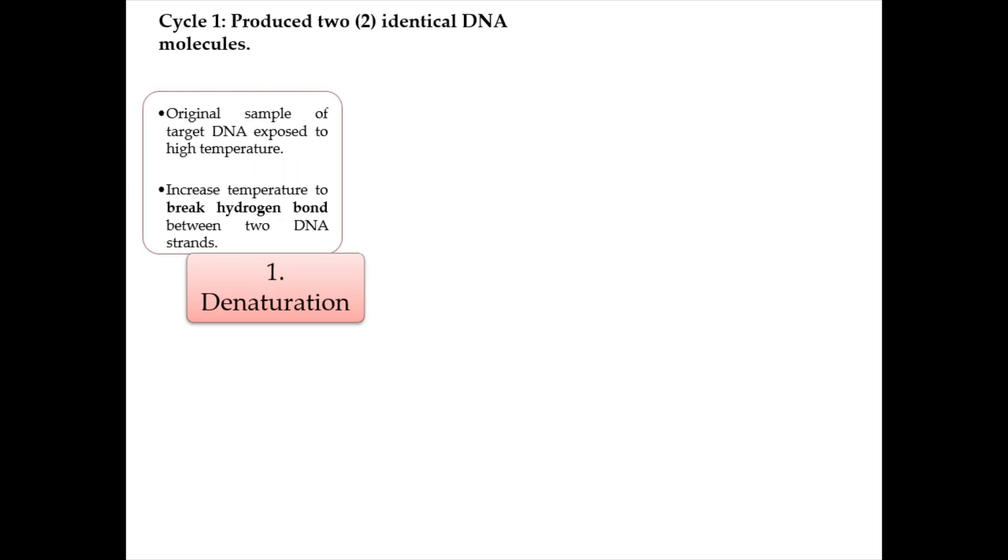PCR is a three-step cycle. First step is called denaturation. Original sample of the target DNA is exposed to high temperature up to 98 degrees Celsius. This high temperature is to break hydrogen bonds between the two DNA strands and separate them. This step takes around 15 seconds to two minutes.